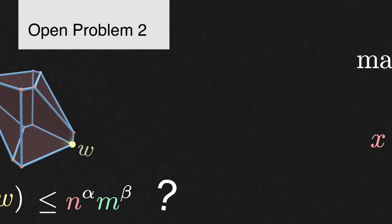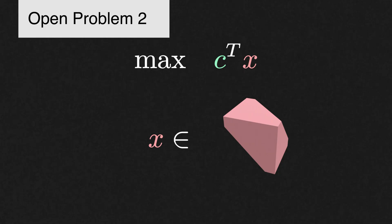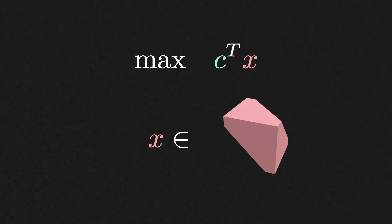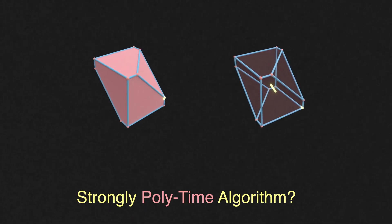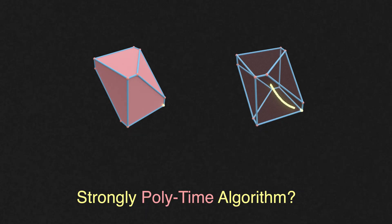The second related major open problem is as follows. Is there an algorithm for solving linear programs that runs in strongly polynomial time? Maybe a variant of the simplex method or the interior point method has a strongly polynomial running time, but today we just lack the know-how to either prove or disprove that.